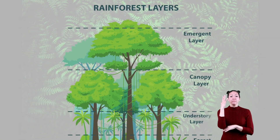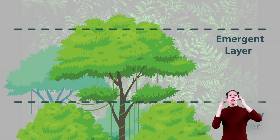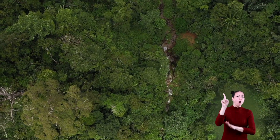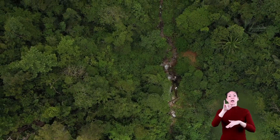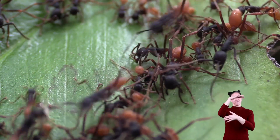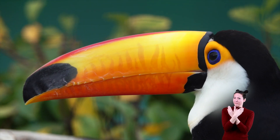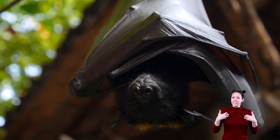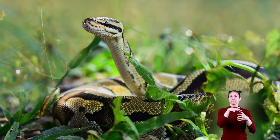First up is the emergent layer, which is at the very top of the rainforest. Only the tallest trees can reach this layer. Animals and insects that live here include birds, butterflies, bats, small monkeys, and snakes.